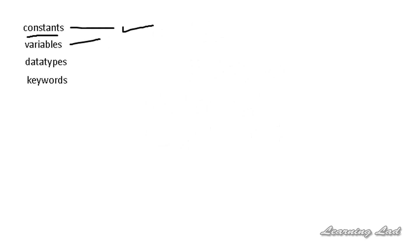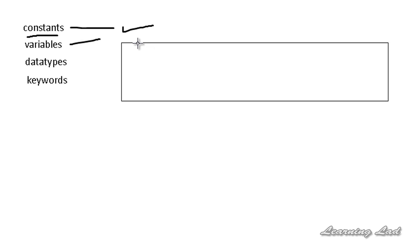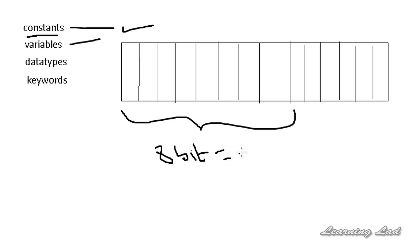In computer memory, whatever values we save will be stored in zeros and ones. This computer memory is divided into small bits, and these small bits are grouped to form bytes. Eight bits are grouped to form one byte — so eight bits equals one byte. The values zeros and ones are stored in these bits.